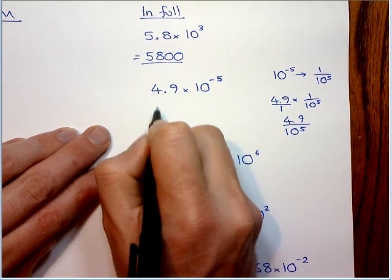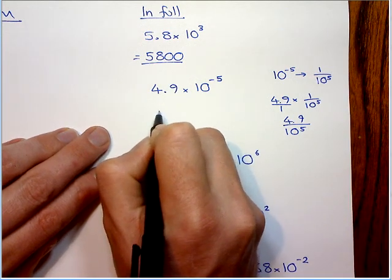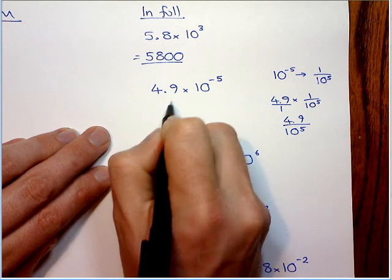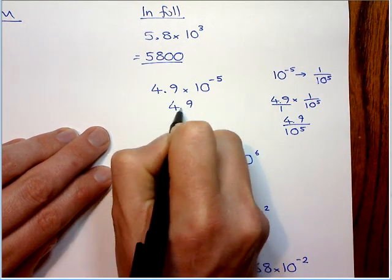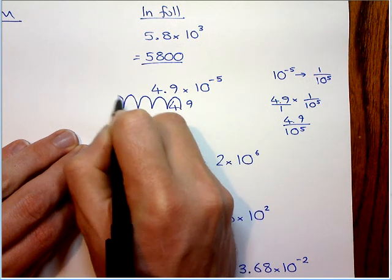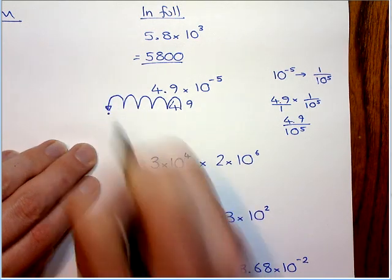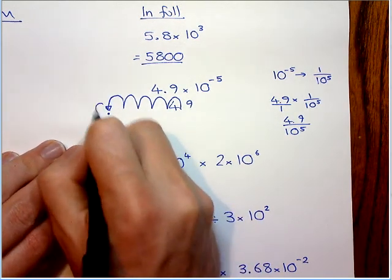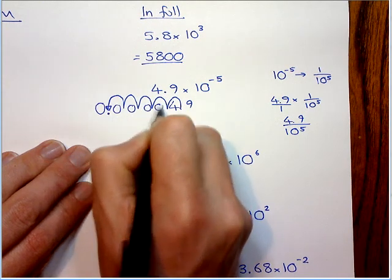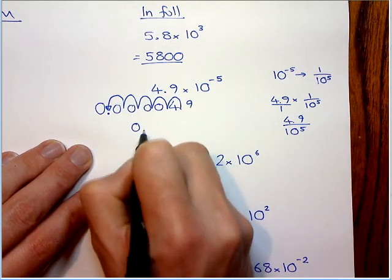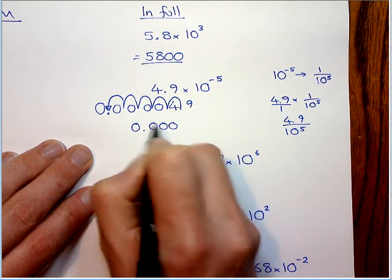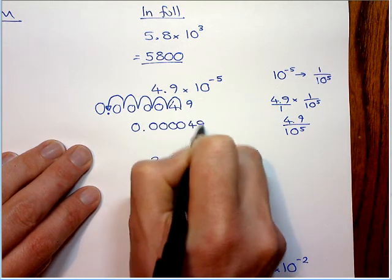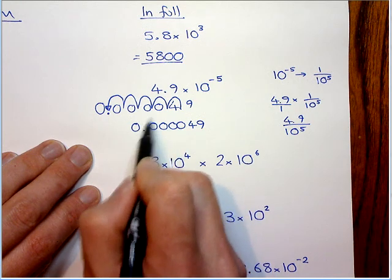So that's what we're doing. It's 4.9, so dividing it by 10, 5 times. So it's going to go once, twice, 3, 4, 5. So it's going to be there. So it's going to be 0 points. I'm going to just add the placeholders in. So 0.000049. Always double check, 1, 2, 3, 4, 5.